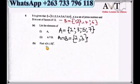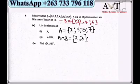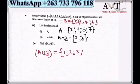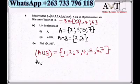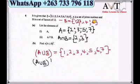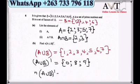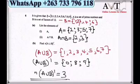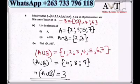Finding n(A ∪ B)'. First write A ∪ B = {1, 2, 3, 4, 5, 6, 7}. The complement (A ∪ B)' contains elements in the universal set not in A ∪ B, which are {0, 8, 9}. The number of elements is 3. Note that n(A ∪ B)' is written without set brackets.